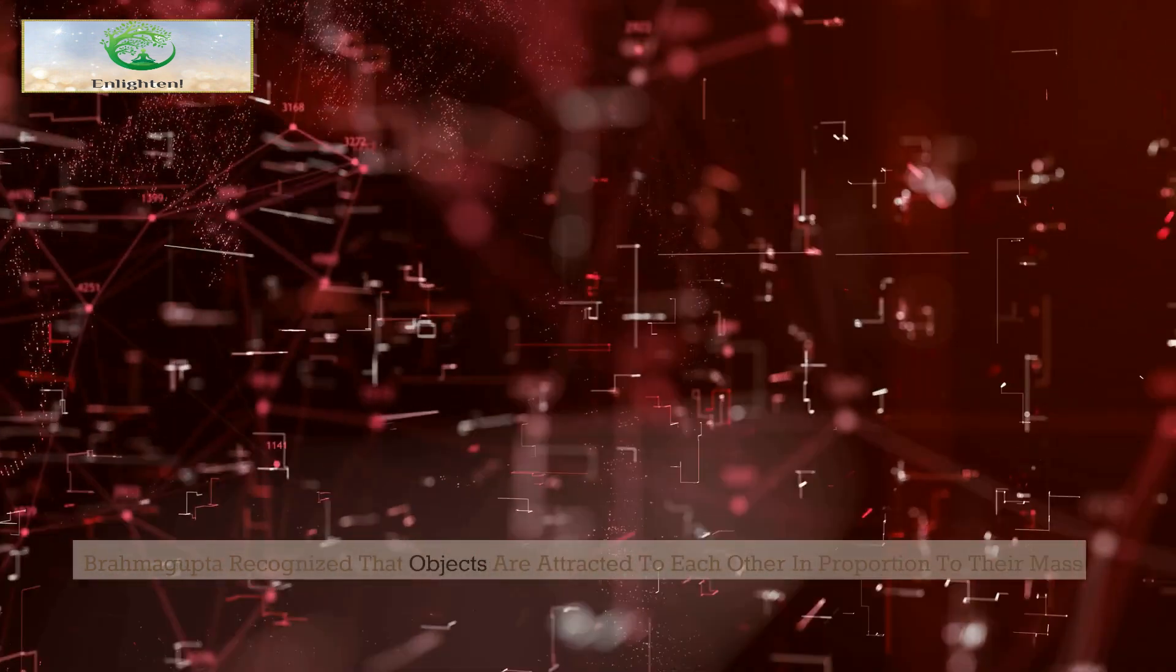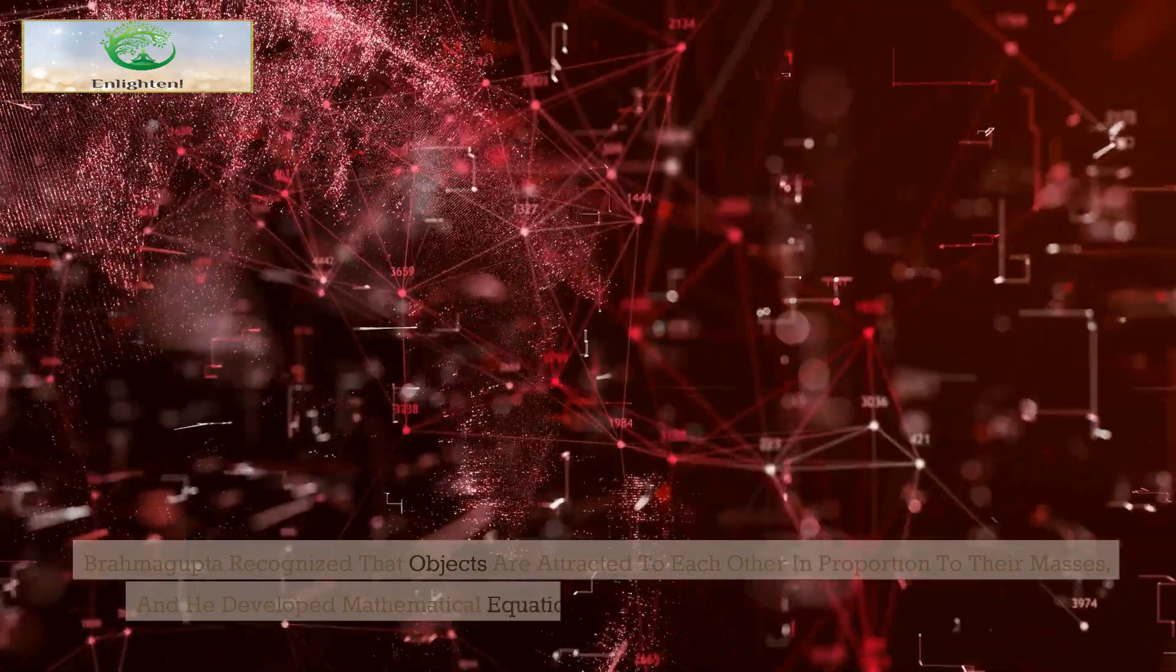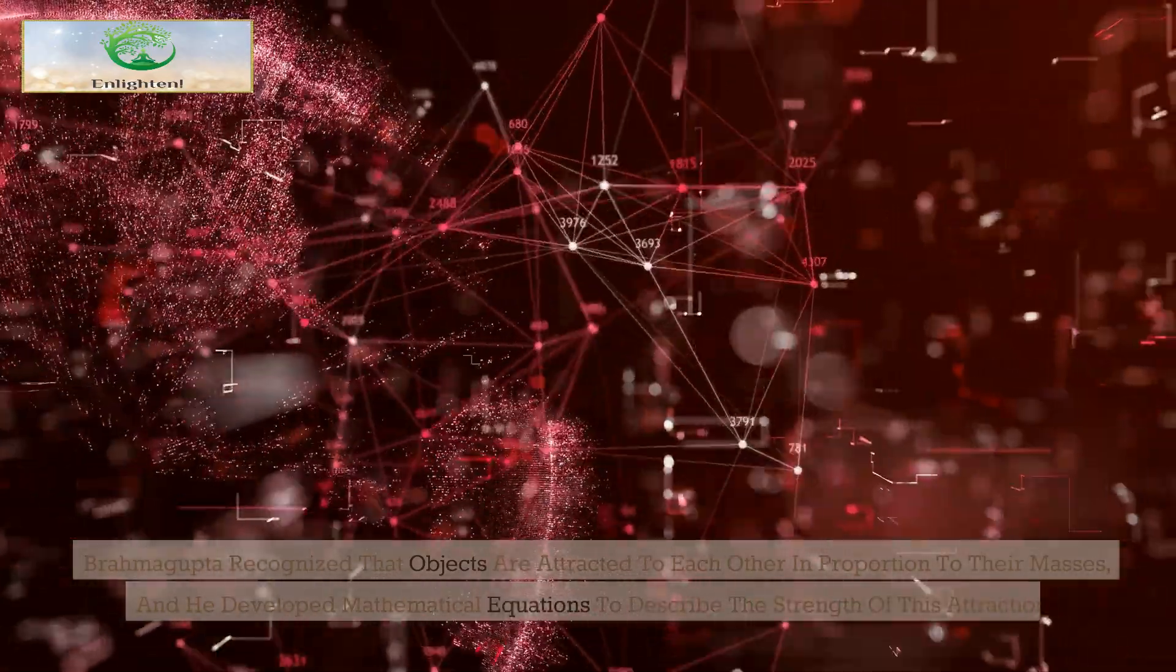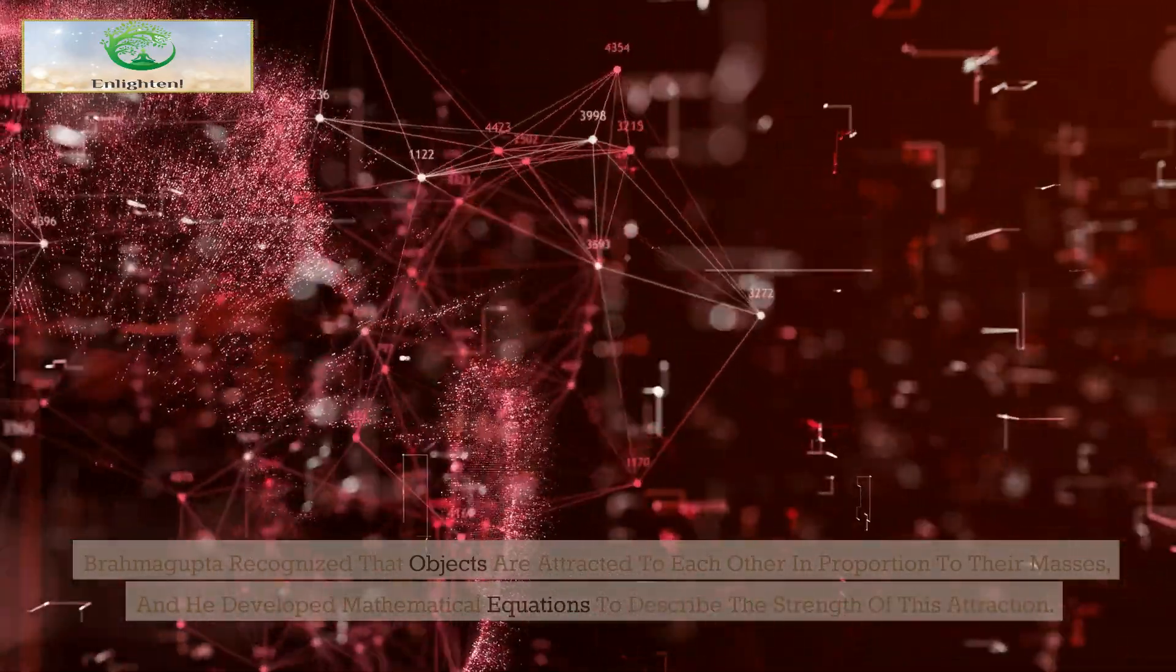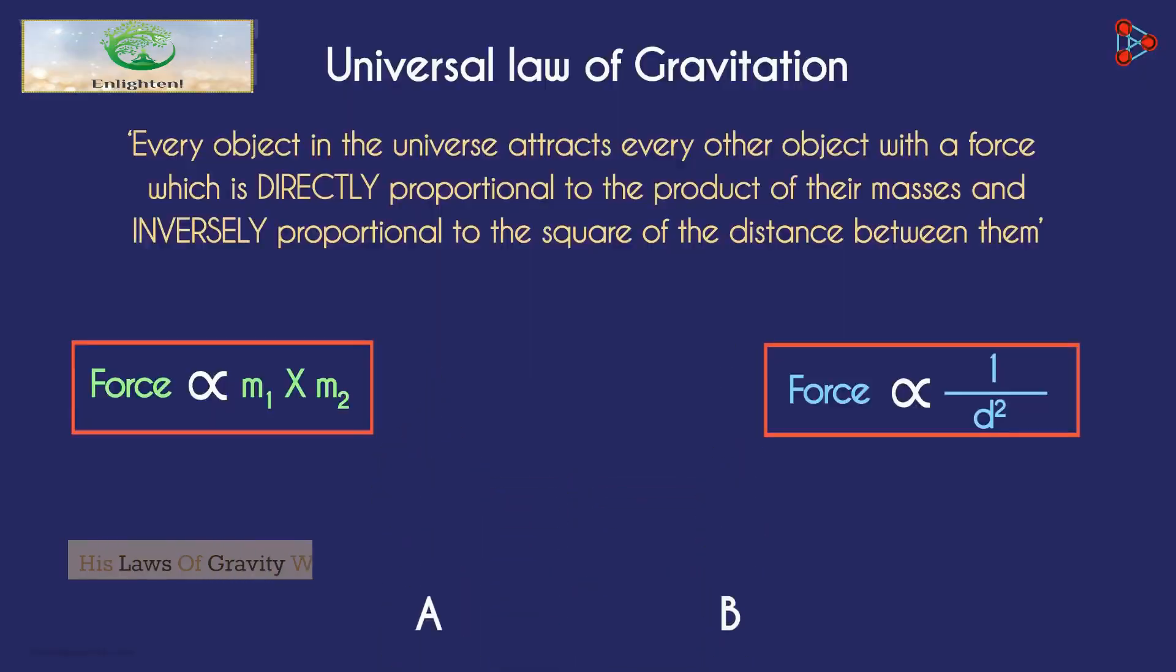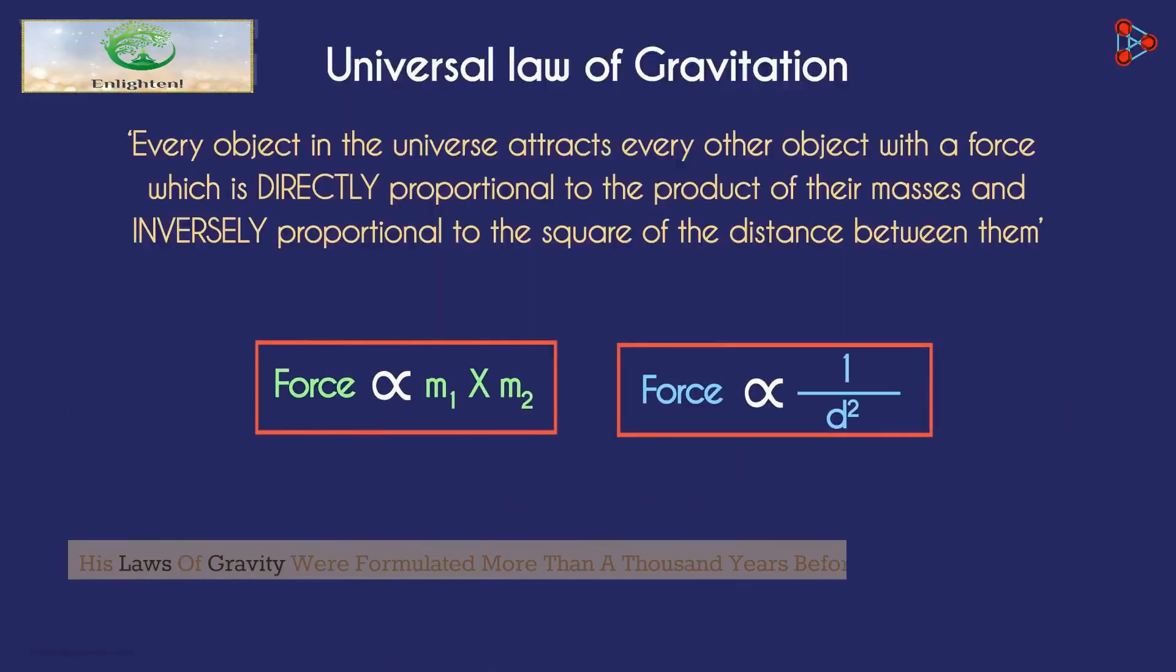Brahmagupta recognized that objects are attracted to each other in proportion to their masses, and he developed mathematical equations to describe the strength of this attraction. His laws of gravity were formulated more than a thousand years before Newton's famous work on the subject, but they were largely forgotten in the centuries that followed.